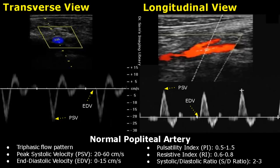This graph is the same as the other one, just with the opposite direction — the blood flow direction is opposite as compared to the blood flow in the other image. Otherwise, both waveforms are the same. The peak systolic velocity or PSV of the popliteal artery is between 20 to 60 centimeters per second, and the end diastolic velocity is between 0 to 15 centimeters per second.